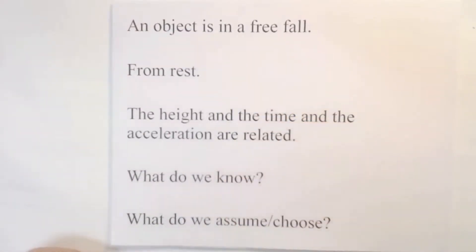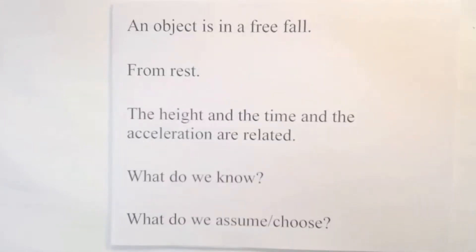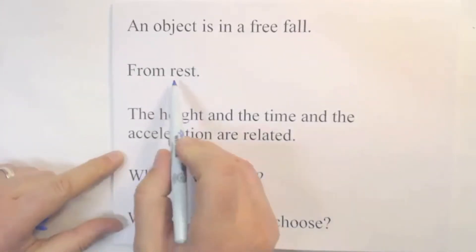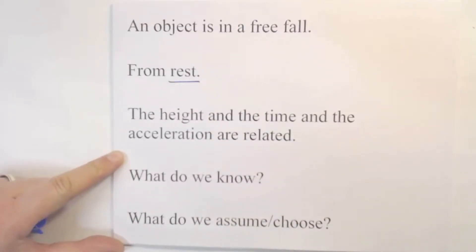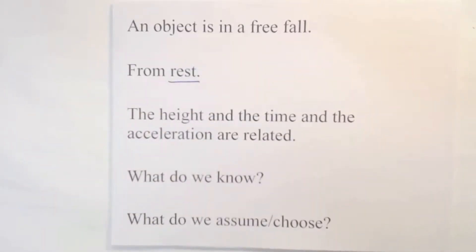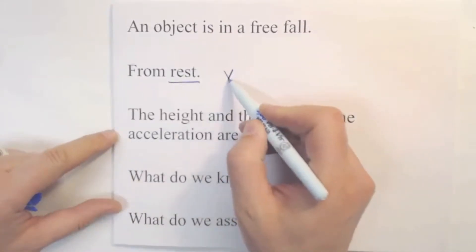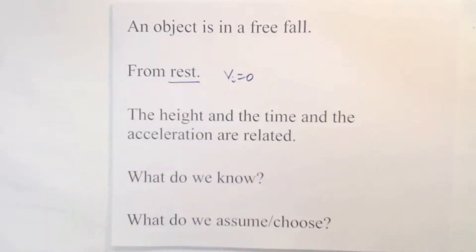We know the object is in free fall — because it is released close to the surface of the earth. We know its initial velocity is zero. How do we know? We can read this: the word 'rest' means the initial velocity is zero. We know the initial velocity is zero. We also know that the height, the time, and the acceleration are supposed to be related.